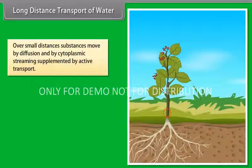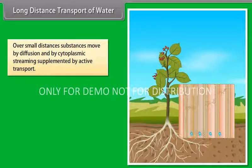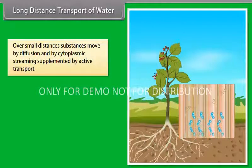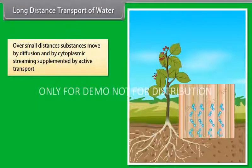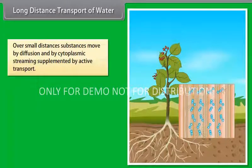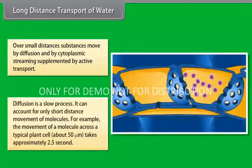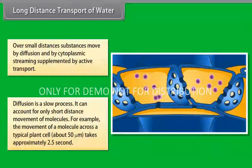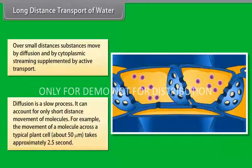Long distance transport of water. Friends, as we all know that over small distances, substances move by diffusion and by cytoplasmic streaming, supplemented by active transport. Long distance transport of substances within a plant cannot be by diffusion alone. Diffusion is a slow process. It can account for only short distance movement of molecules.